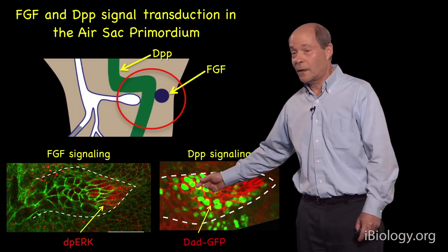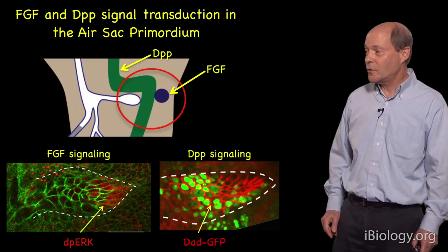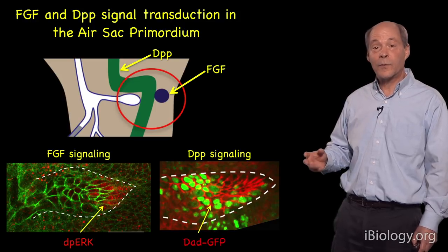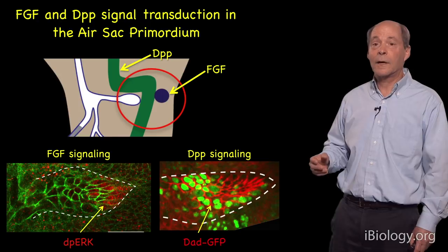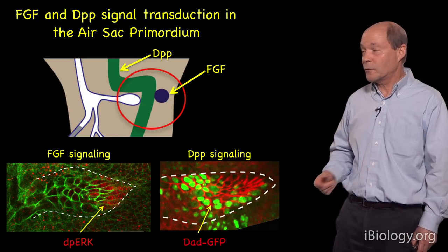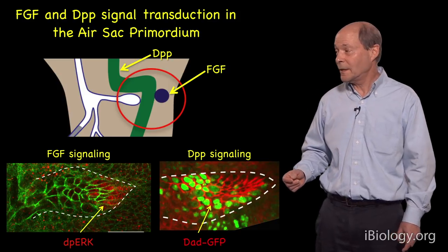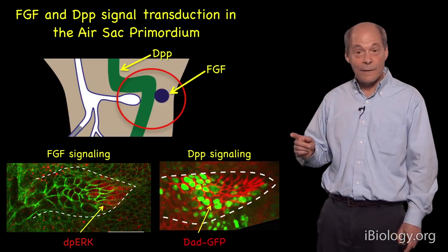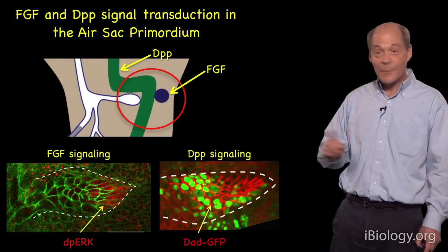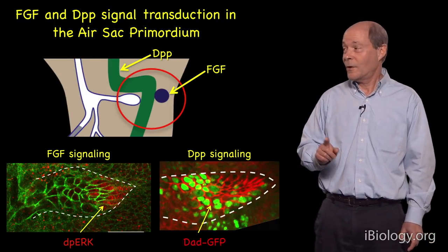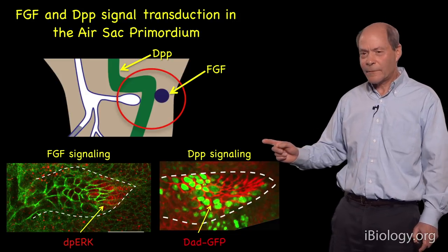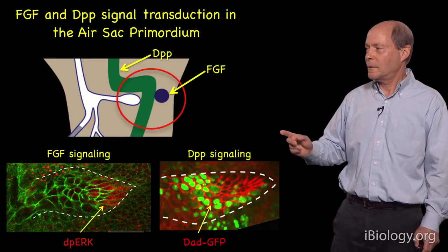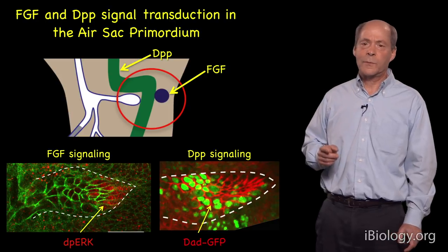These micrographs demonstrate that cells at the tip of the air sac primordium, nearest the source of FGF, are active in FGF signaling as indicated by the presence of diphospho-ERK, monitored with an anti-diphospho-ERK antibody. The right panel shows those cells are also active in DPP signaling, indicated in green. The air sac primordium does not make DPP — it does express the receptor — only the disc cells make DPP. This FGF and DPP signal transduction is a consequence of DPP and FGF produced in the wing disc.